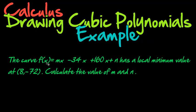This time it tells us that the curve f(x) = mx³ - 34x² + 160x + n has a local minimum value when x is equal to 8 and y is equal to negative 72. Calculate the value of m and n.